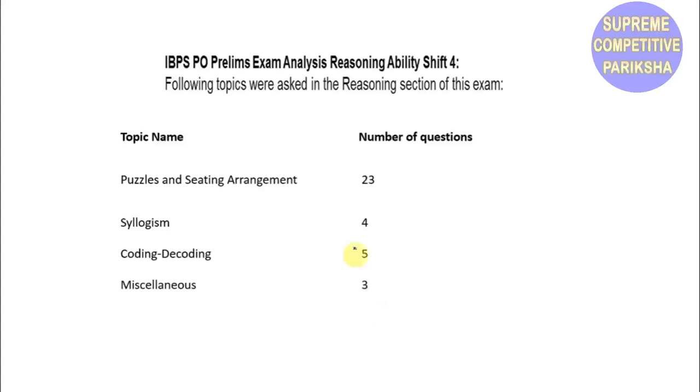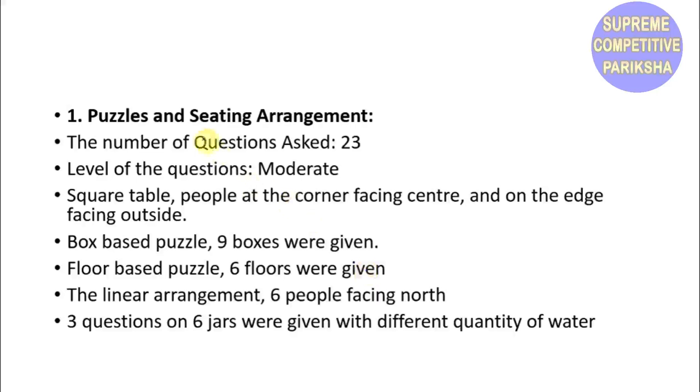Let's look at the Reasoning Ability section topic-wise. Puzzles and Seating Arrangement had 23 questions. You can attempt about 20 marks worth if you're an expert. There might be one puzzle worth 4 marks and one worth 3 marks, making it 23 total. Syllogism had 4 questions, Coding-Decoding had 5 questions, and Miscellaneous had 3 questions.